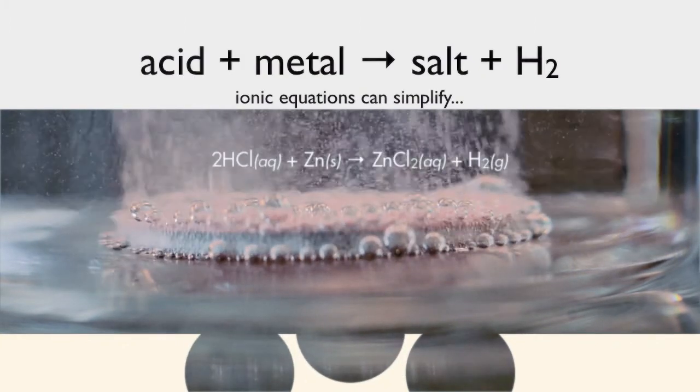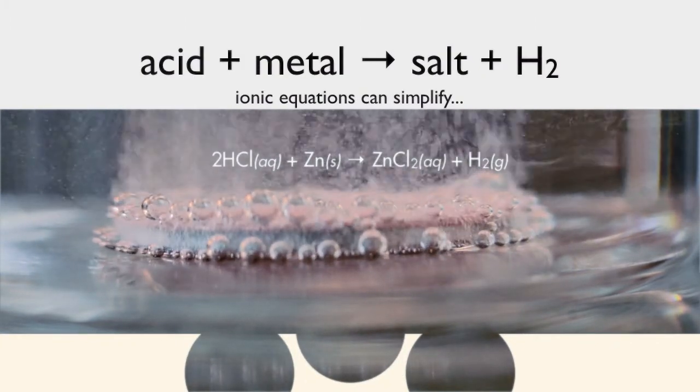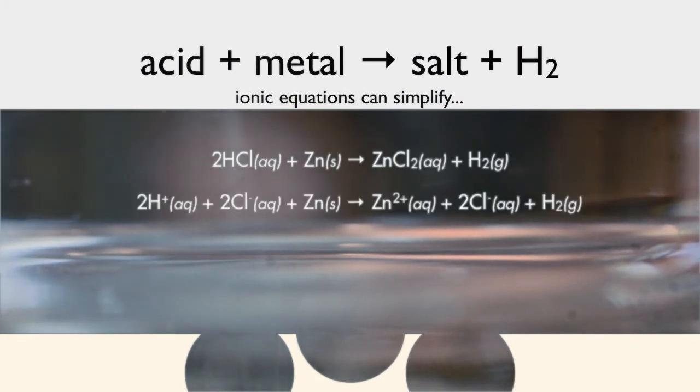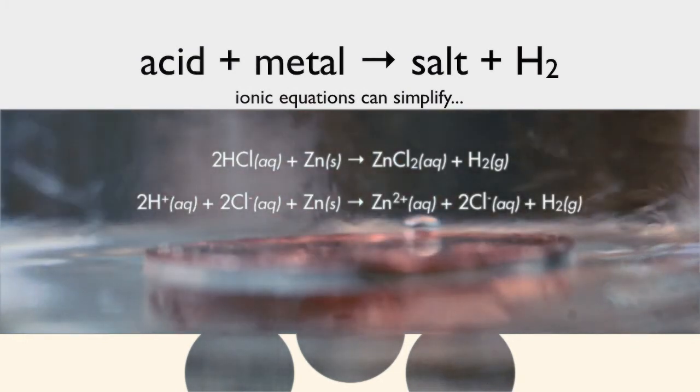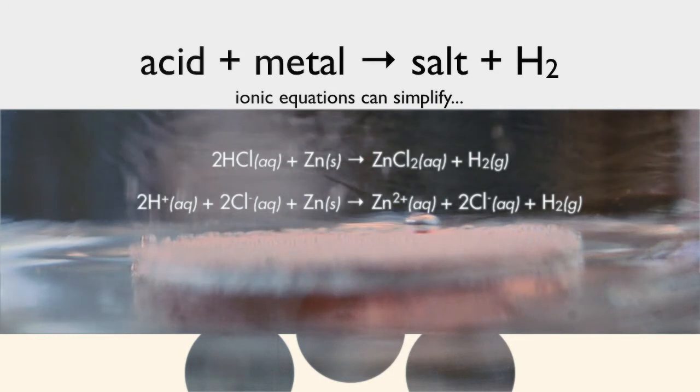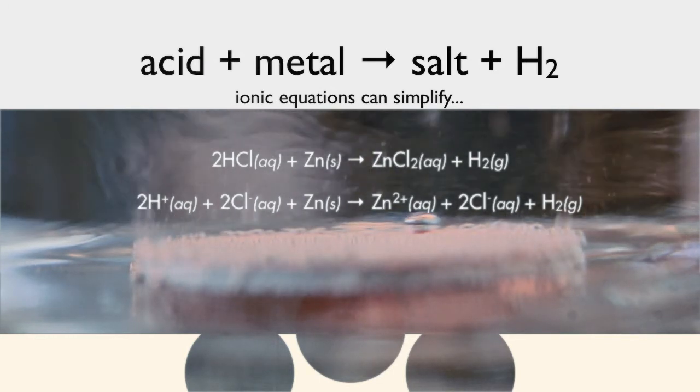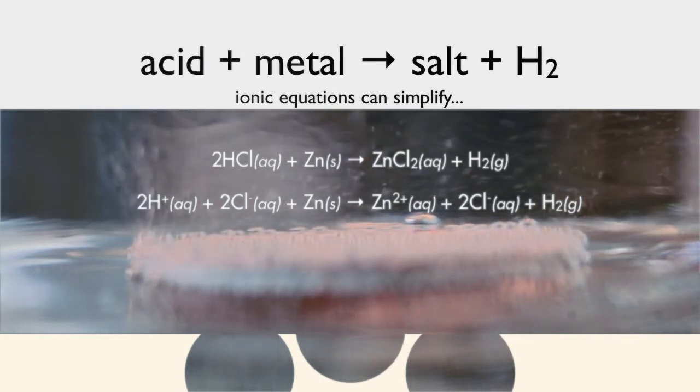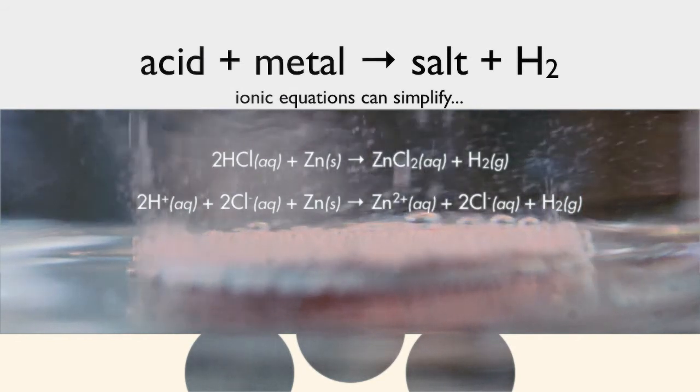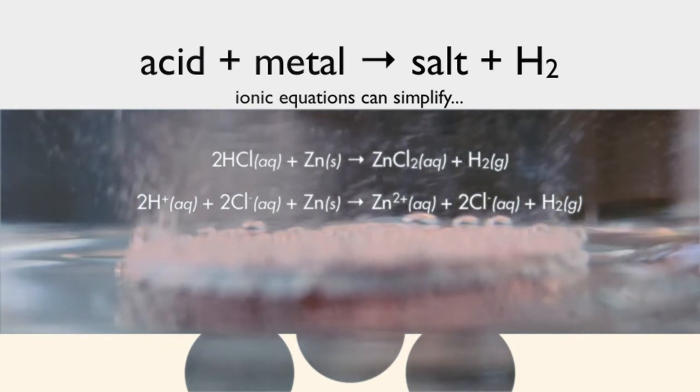We can see that if we write ionic equations, we can simplify the reaction. Here we've got our hydrochloric acid and zinc again. We can write it out as an ionic equation where we break everything apart. There's the two hydrogen ions and the two chloride ions plus zinc, which is neutral by itself, forming zinc two-plus ion and two chloride one-minus ions, which is why they stick together and make zinc chloride and hydrogen gas.